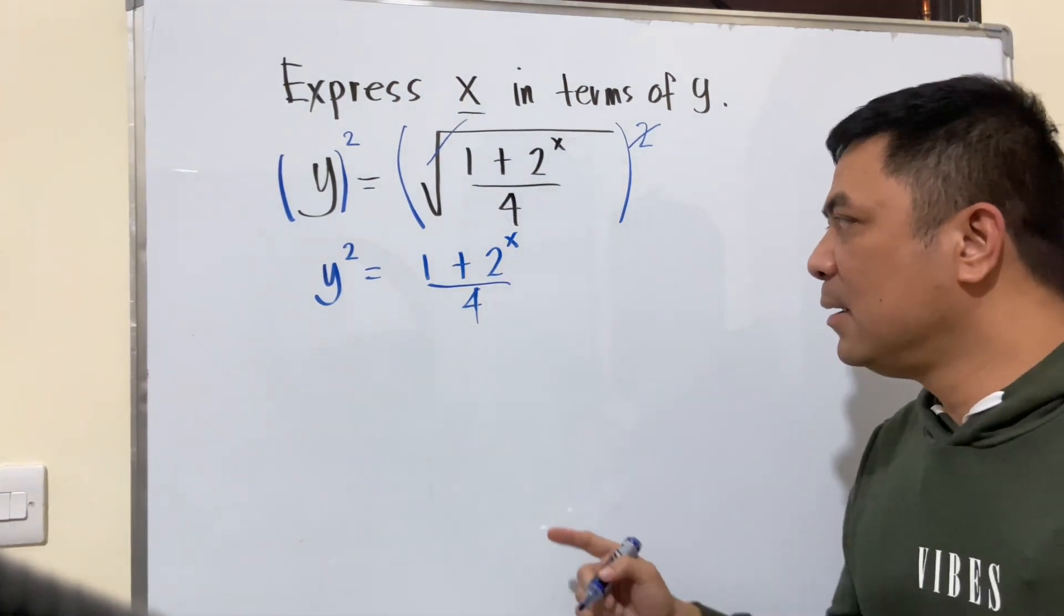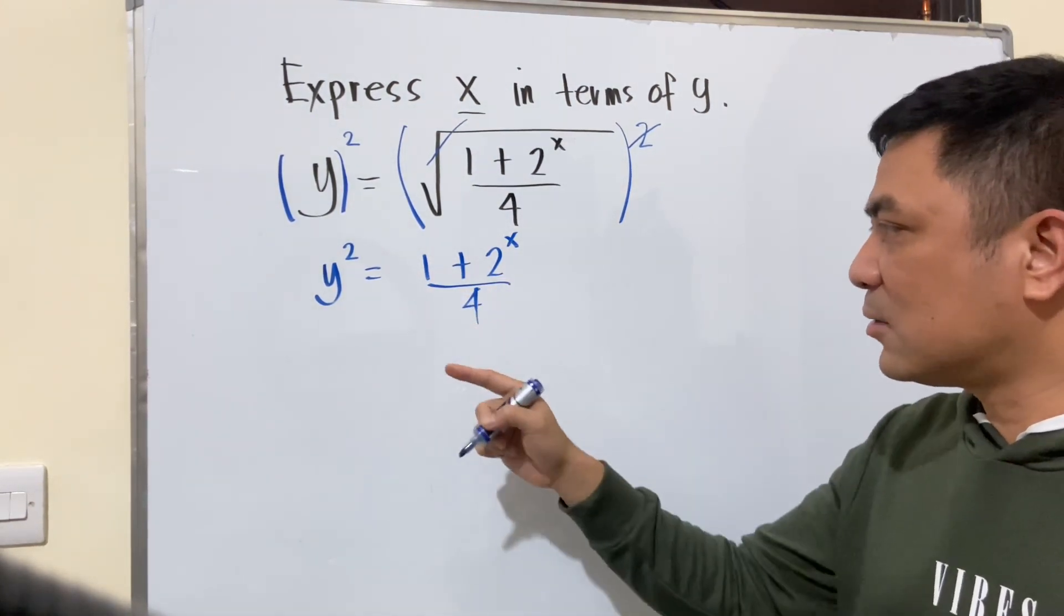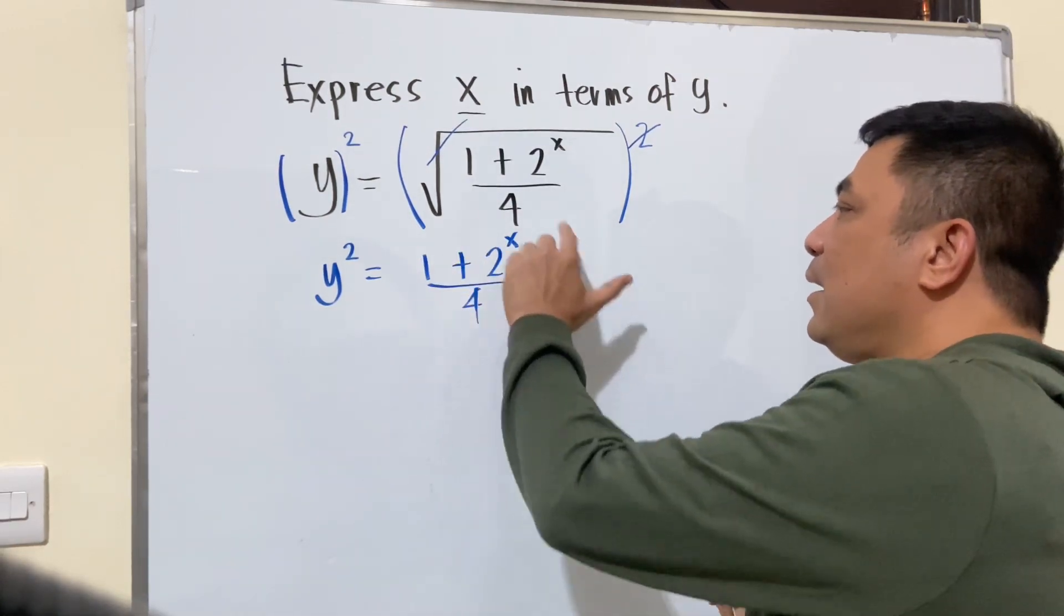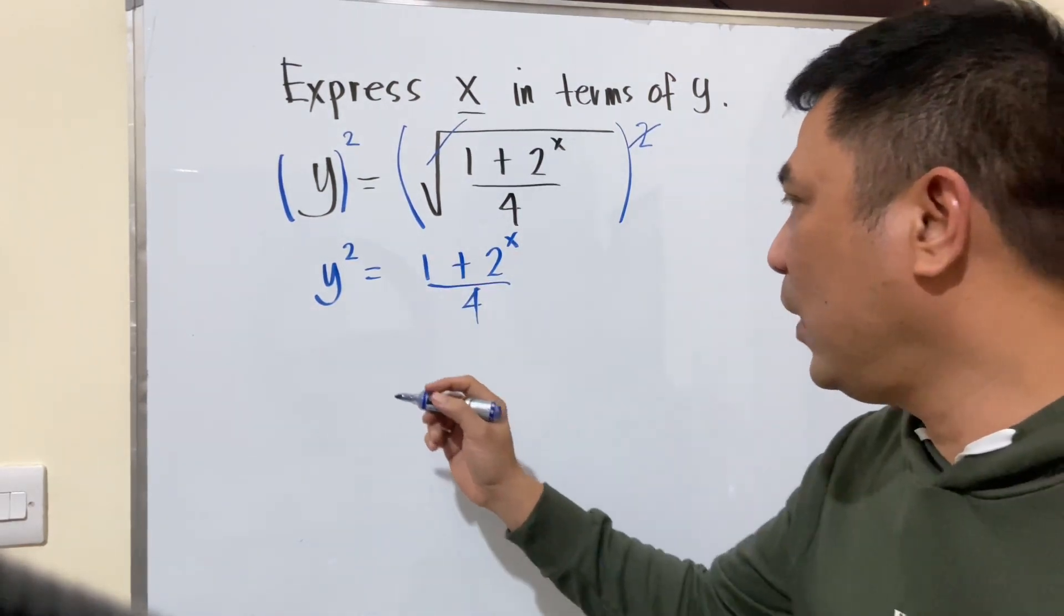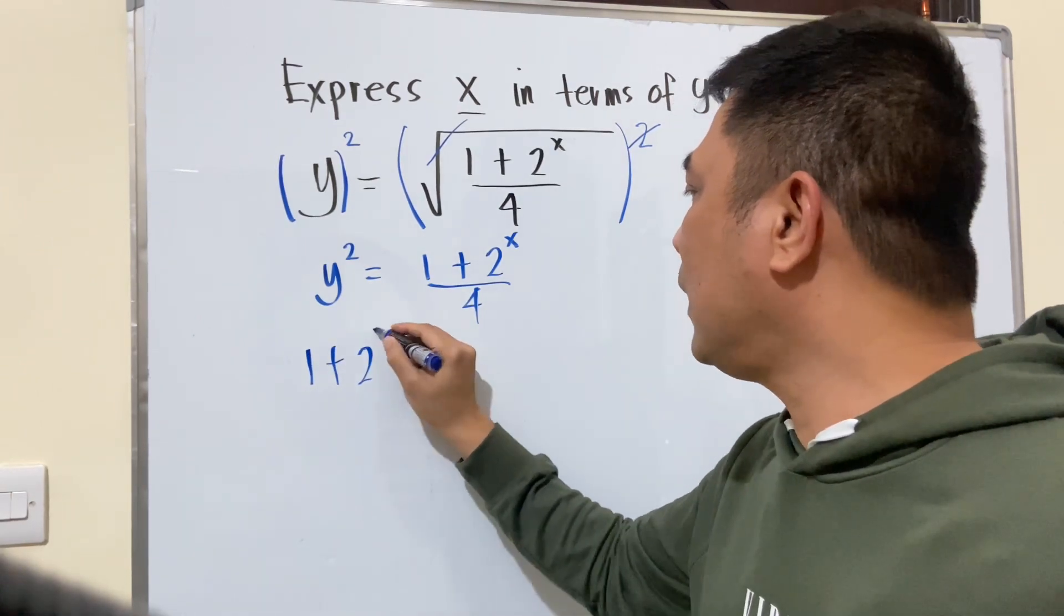Since we are looking for x, let's write this quantity here on the other side of our equation. So 1 plus 2 raised to x.